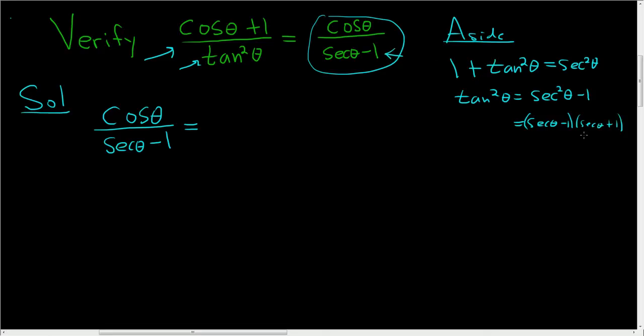So here we have secant theta minus 1. We're missing a secant theta plus 1. So maybe a good idea is to take what we have and multiply by secant theta plus 1 over secant theta plus 1. Is this going to work? We'll find out. Is there an easier way? I honestly don't know. I've never done this problem before.